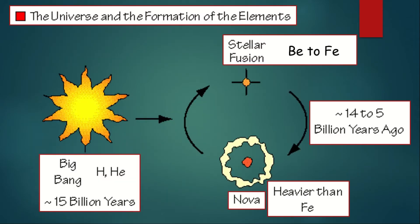This illustration shows us the universe and the formation of the elements. During the Big Bang, hydrogen and helium were the first elements formed, and that happened 15 billion years ago. As the universe developed, stellar fusion occurred, wherein the stars were formed.